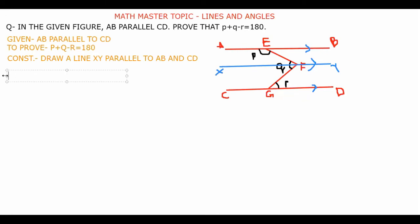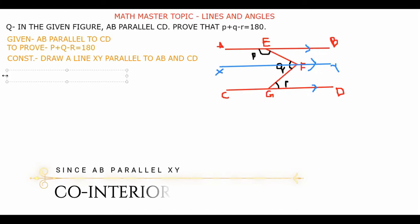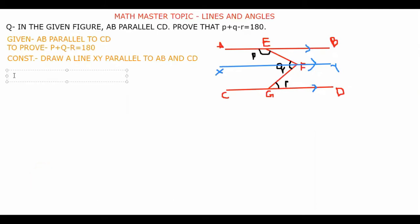You can see that in the parallel lines AB and XY, EF is a transversal. By the co-interior angles property — which states that when a transversal cuts two parallel lines, the angles on the same side between the parallels sum to 180° — I can say that angle AEF plus angle EFX equals 180°.